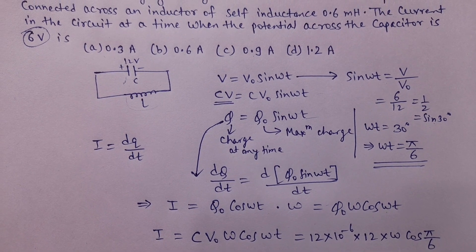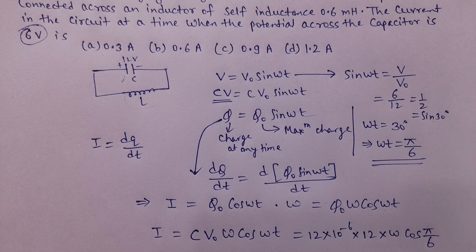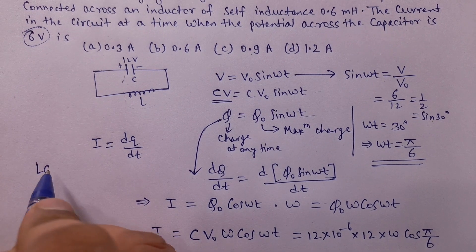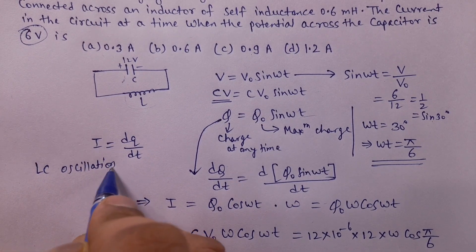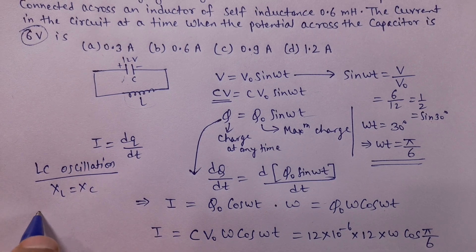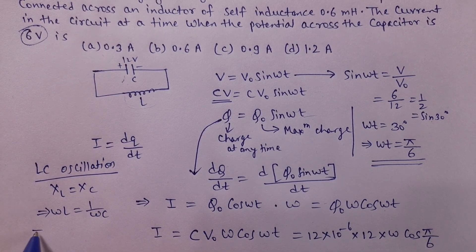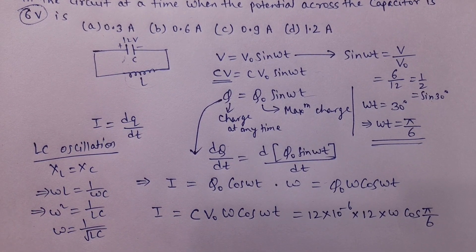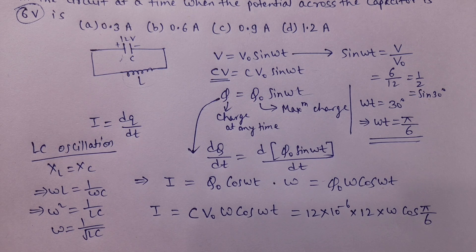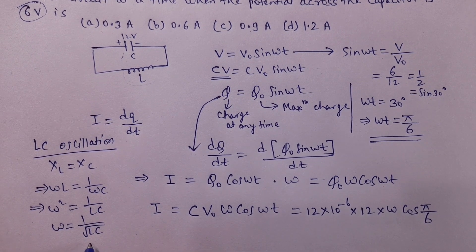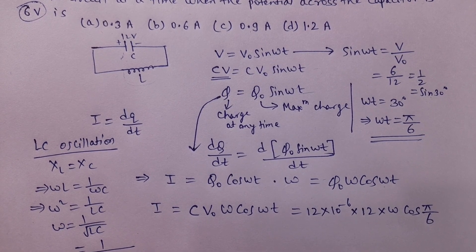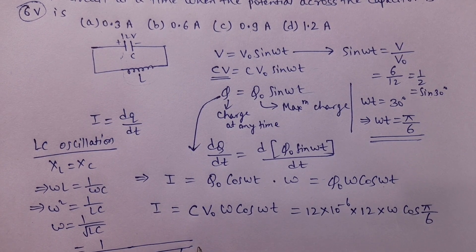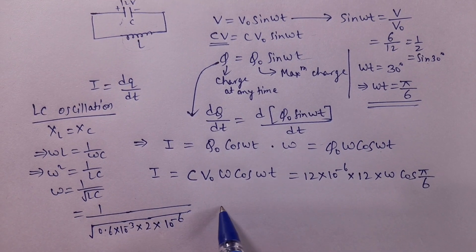यह problem LC oscillation की है — सिर्फ capacitor को charge करके inductor के across connect किया है. LC oscillation में X_L = X_C होता है, so ωL = 1/(ωC), which gives ω² = 1/(LC) and ω = 1/√(LC). So ω = 1/√(0.6×10⁻³ × 2×10⁻⁶). इसको calculate करते हैं.